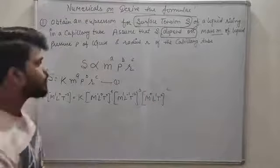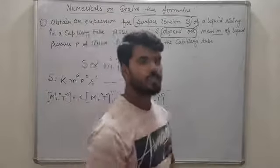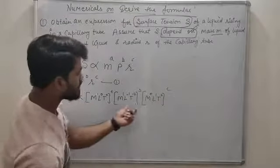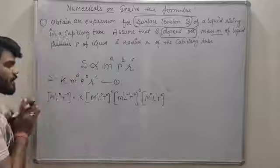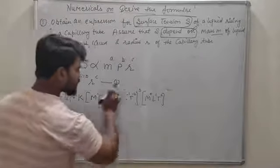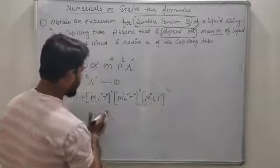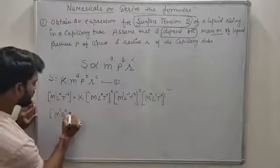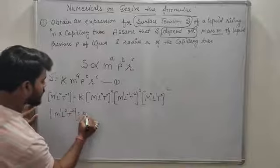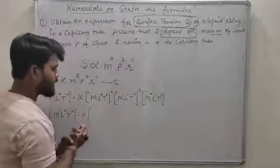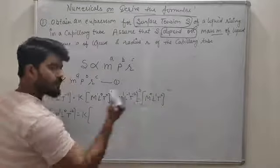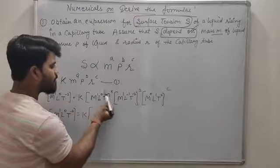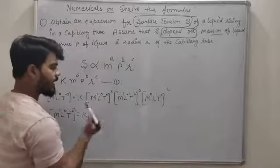कोई भी mistake पूरा numerical गलत कर देगी — तो be careful। बहुत ध्यान से dimensional formulas put करने हैं। अब इसको modify करना है — constant नीचे तक साथ चलेगा। M को solve करते हैं: M raised to power 1 — power पे power होती है तो multiply होती है, M raised to power A।